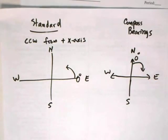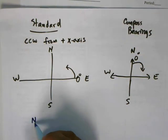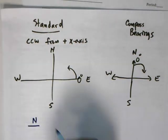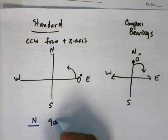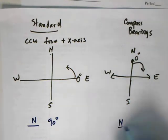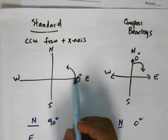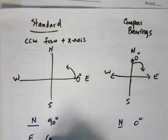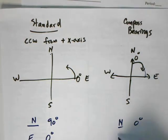We can look at some examples. If you look at north in standard form, that is going to be 90 degrees — from here to here is 90 degrees. But in compass bearings, because you're starting from north, this is zero degrees. For standard form, due east is actually zero degrees, but over here you're starting from north and rotating down, so east would actually be 90 degrees.